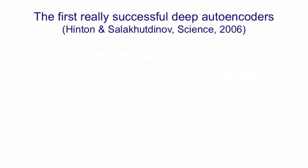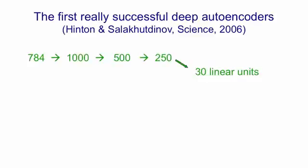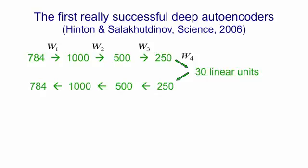The first really successful deep autoencoders were learned by Russ Salakhutdinov and I in 2006. We applied them to the MNIST digits. So we started with images with 784 pixels, and we then encoded those via three hidden layers into 30 real-valued activities in a central code layer. We then decoded those 30 real-valued activities back to 784 reconstructed pixels. We used a stack of restricted Boltzmann machines to initialize the weights used for encoding, and we then took the transposes of those weights and initialized the decoding network with them.